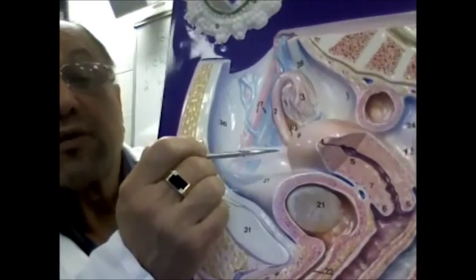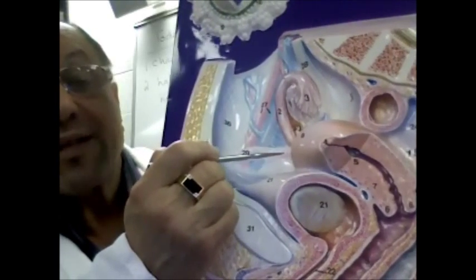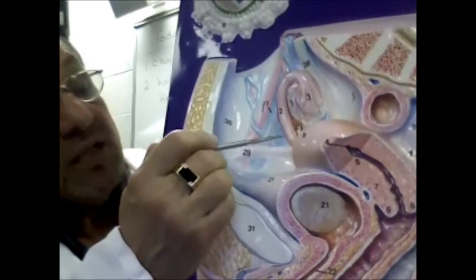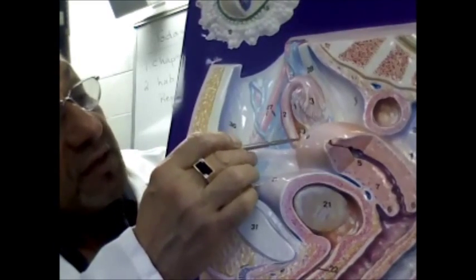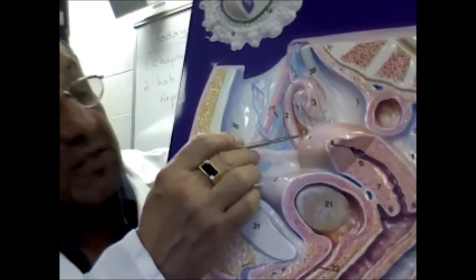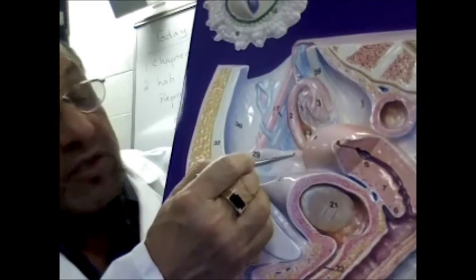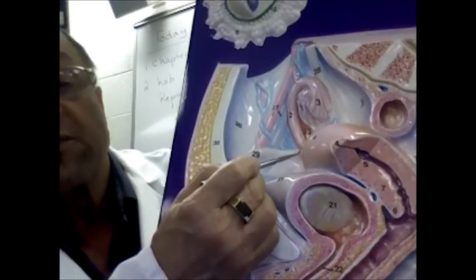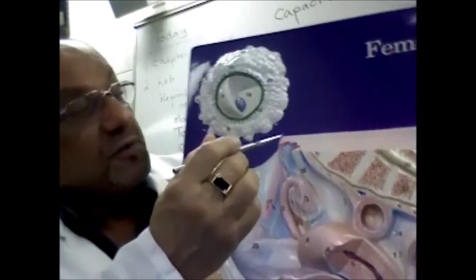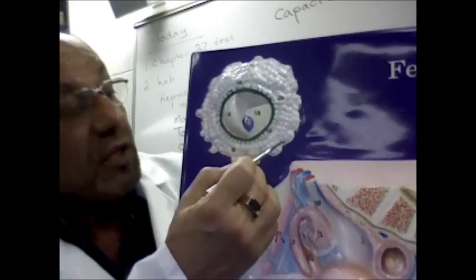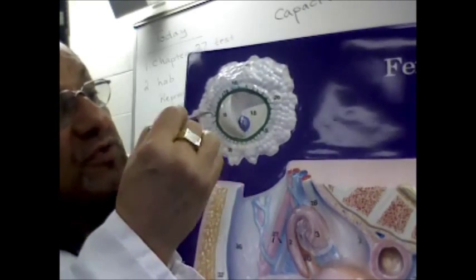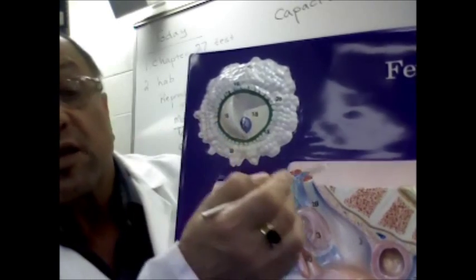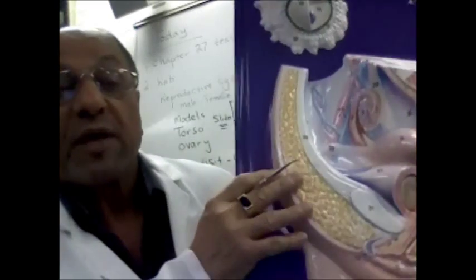The reproductive organs of the female are held together in the pelvic cavity by a number of ligaments, and two of these ligaments are visible on this model. This ligament here is known as the round ligament. On the model we also see the ovulated egg — the oocyte portion here — and all the cells that surround the oocyte, known as the corona radiata. So that's the anatomy of the female reproductive system.